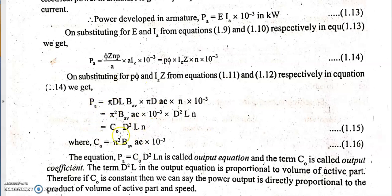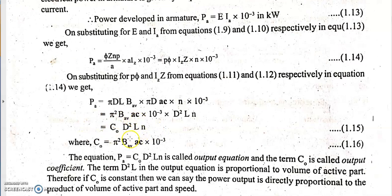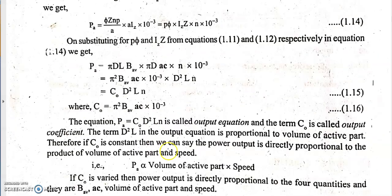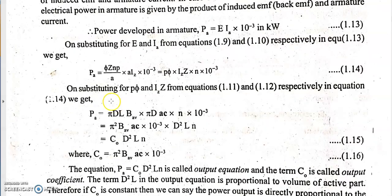So the first form of the output equation is PA = C₀ × D²L × n, where n is in RPS, and C₀ = π² × B_average × AC × 10⁻³. From this equation we first separate out D²L and then separate D and L individually to obtain the main dimensions of the armature.